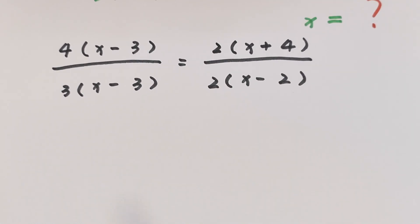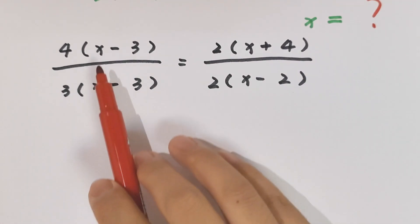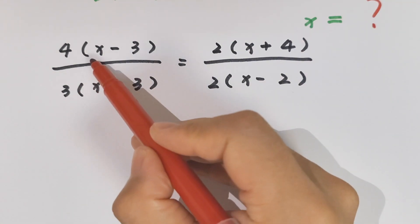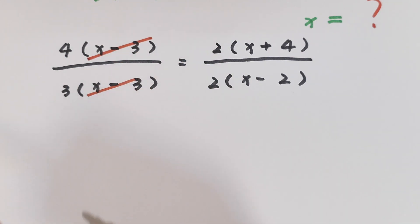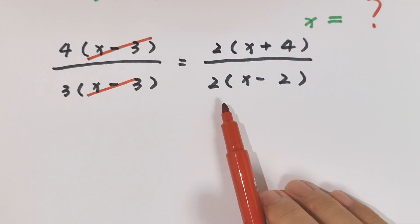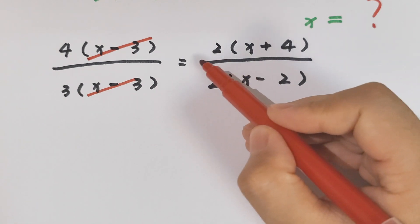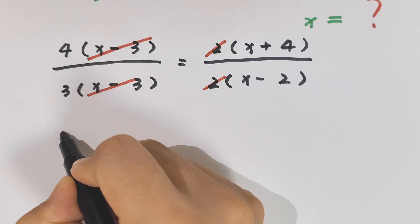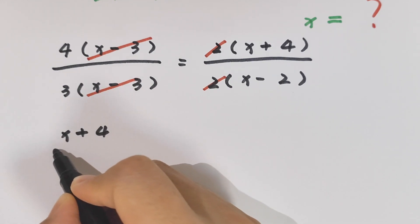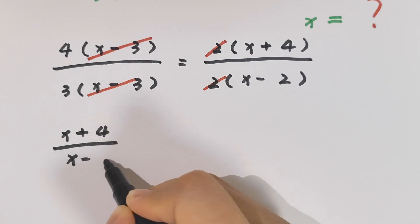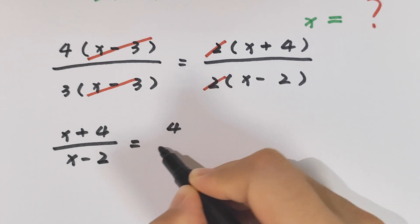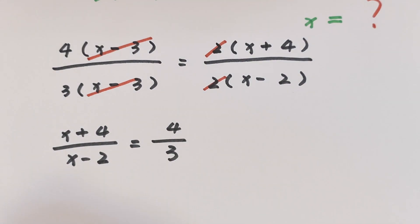Now on the left side, x minus 3 is common, so this will cancel with this. And on the right side, 2 is common, so we cancel. It will be x plus 4 over x minus 2 equals 4 over 3.